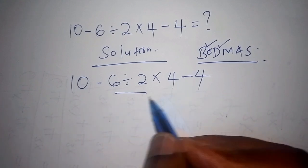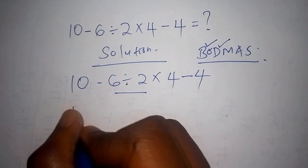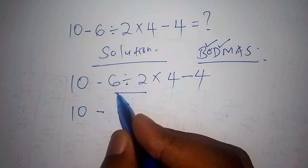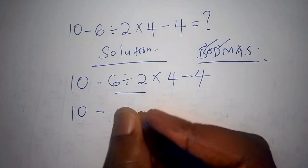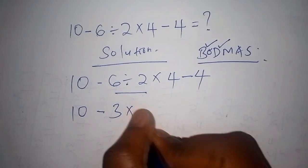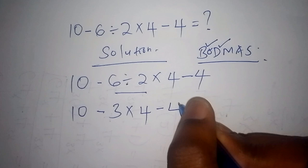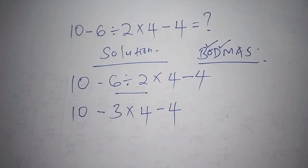So when you work out the division, how will we have it? So here now we shall have 10 minus, so when you work out 6 divided by 2, now we shall have 3, then multiply by 4, subtract from 4. So that is the first step that you need to work out.